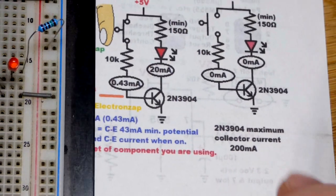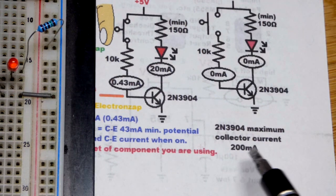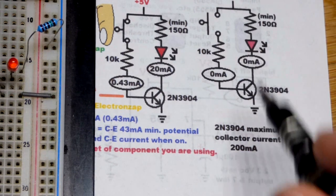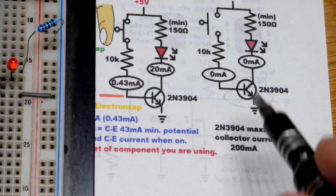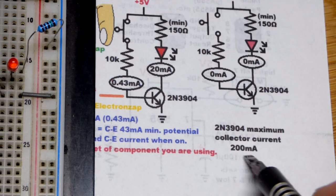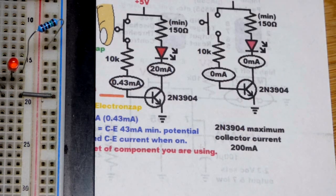The 2N3904 has an absolute maximum of about 200 milliamps of current. It will allow to flow through there. So you really only want to use it for circuits where you got less than about a hundred milliamps of current.